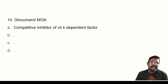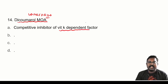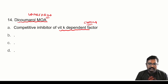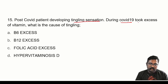There was a question regarding dicumarol mechanism of action. Dicumarol is warfarin — an orally available anticoagulant. Its mechanism of action is competitive inhibition of vitamin K-dependent clotting factors. The right answer is competitive inhibitor of vitamin K-dependent clotting factors 2, 7, 9, 10. Post-COVID patient developed tingling sensation after excess vitamin intake — the cause is hypervitaminosis D.